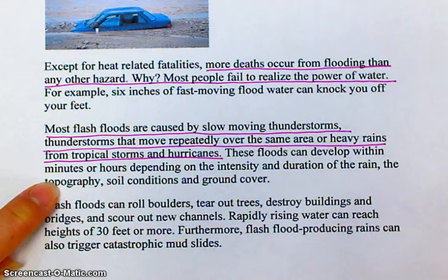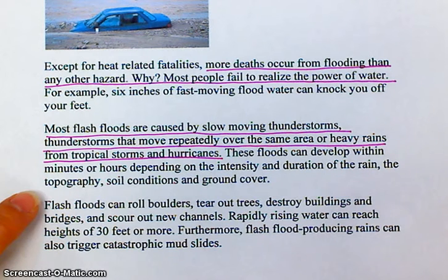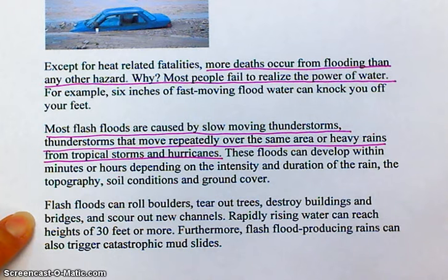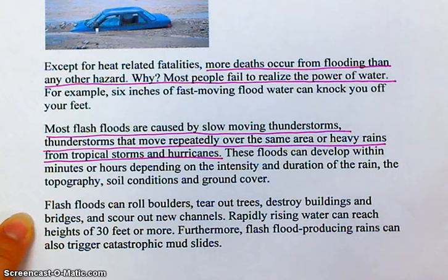Flash floods can roll boulders, tear out trees, destroy buildings and bridges, and scour out new channels. Rapidly rising water can reach heights of 30 feet or more. Furthermore, flash flood-producing rains can also trigger catastrophic mudslides. Mudslides are not as much of a problem in our area because we don't have very steep hills, just sort of rolling hills.